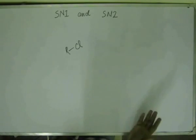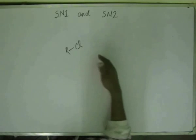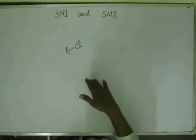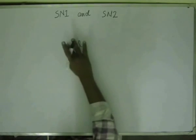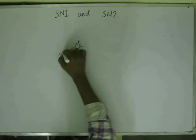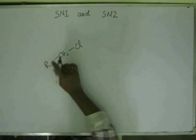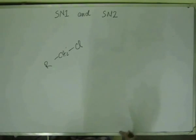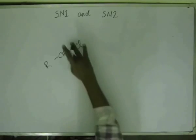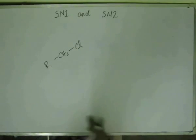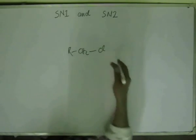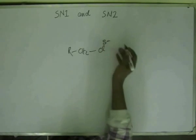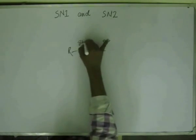How is the first step initiated? The leaving group moves out, but how does the process of moving out start? There would be a carbon attached to this leaving group — be it chlorine, OTs, or any other leaving group. Let's consider it to be chlorine. Chlorine, being more electronegative, will have a slight negative charge, and carbon will have a slight positive charge.